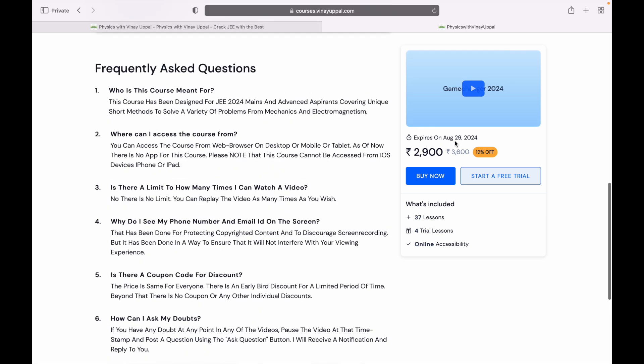The course expiry date is August 29, 2024. That's just an estimate. Basically the course will be available till JEE Advanced 2024. Once the date for JEE Advanced is announced for 2024, the expiry date will get changed to that particular date.